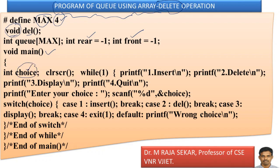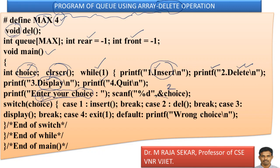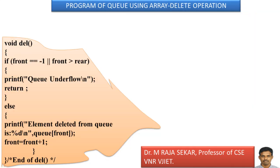Int choice is an integer type variable. Clear screen will clear the output screen. While 1 is an infinite while loop. The menu options are: 1. Insert, 2. Delete, 3. Display, 4. Quit. Here we are interested in deleting the elements. We already discussed insert and display functions in our previous lecture. In this lecture, we will try to understand the delete function. So enter your choice — let me say I entered number 2. That number 2 will get stored in the place of choice. Choice is 2 means switch 2, which means we will go to case 2. In case 2, there is a function known as del, whose definition is in the next slide.